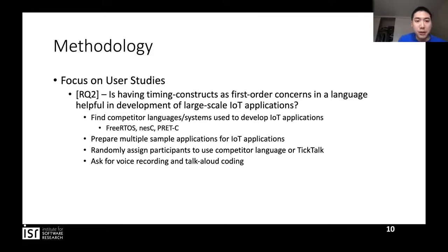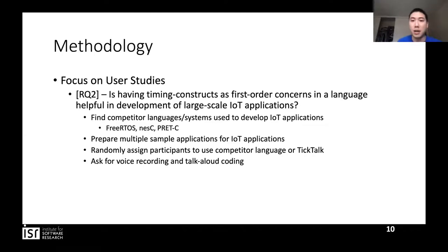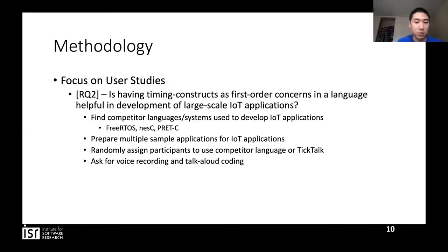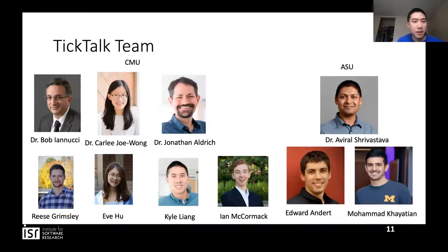For the second research question, this would be a very similar user study, except instead of having the same study for each participant, we would find a competitor system or language used to develop IoT applications. We would prepare multiple sample applications and then randomly assign participants to use either the competitor language or TikTok. Once again, we would use voice recording and talk-aloud coding to generate data. This is the TikTok team — it's a joint project from CMU and ASU. That's the end of my presentation.